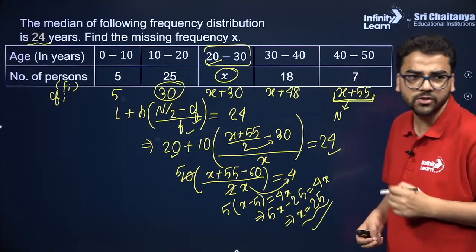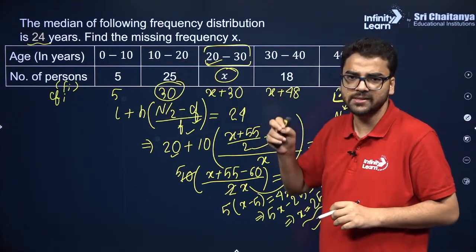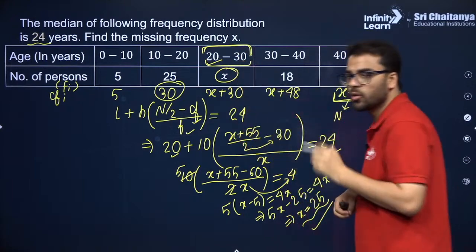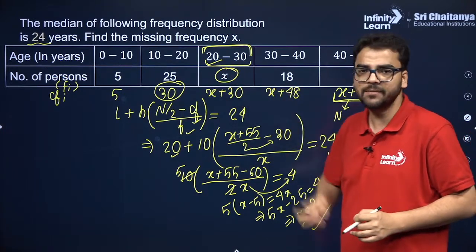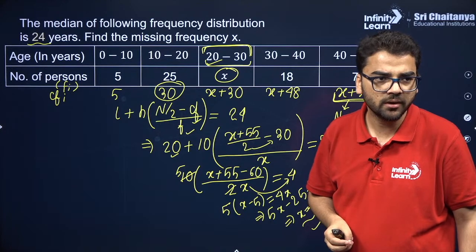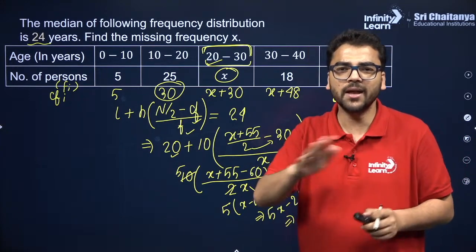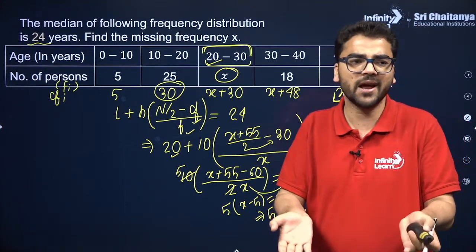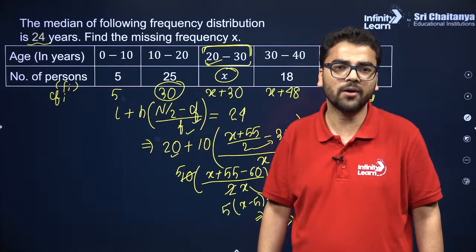So x = 25 is the answer. Since the median is already given as 24 years in the question, we can directly identify the median class — 24 lies in that interval. You don't have to find the median class separately; it comes with practice.